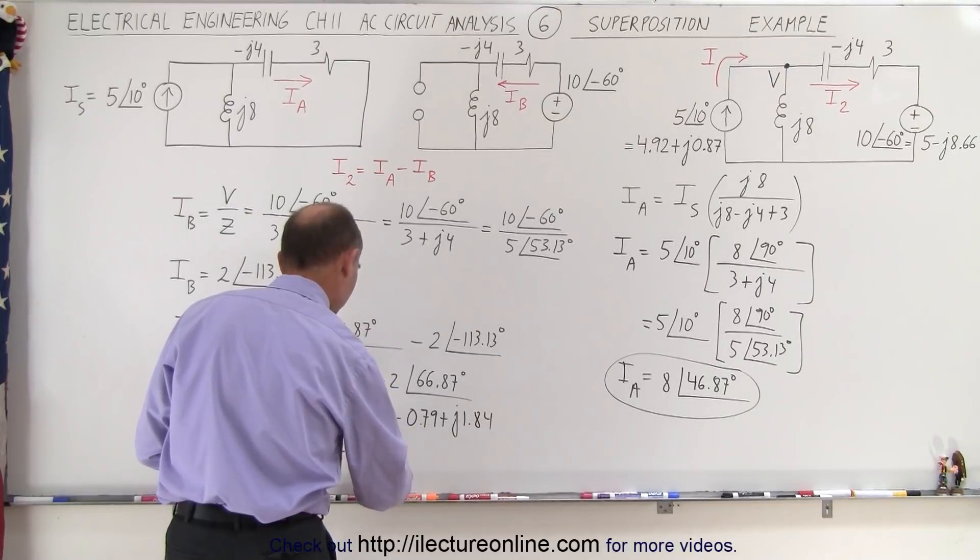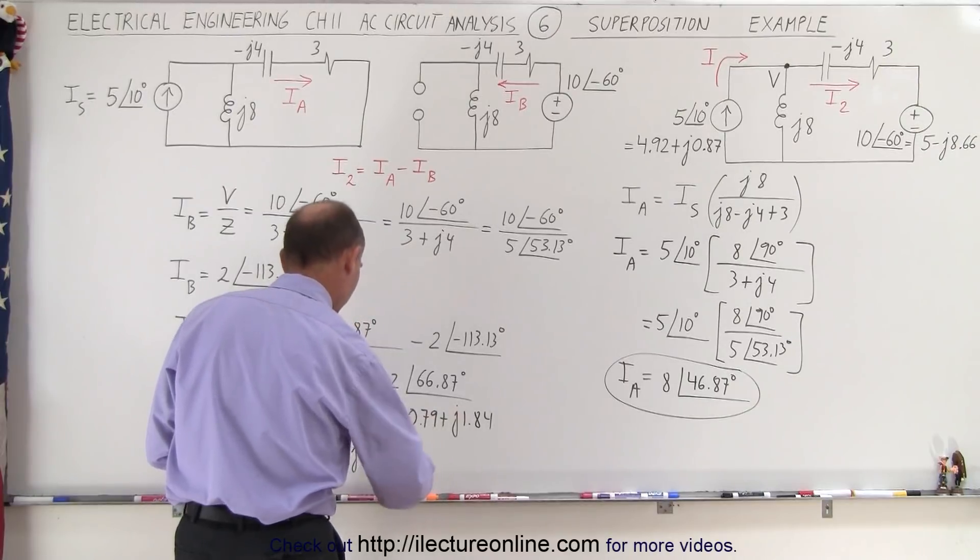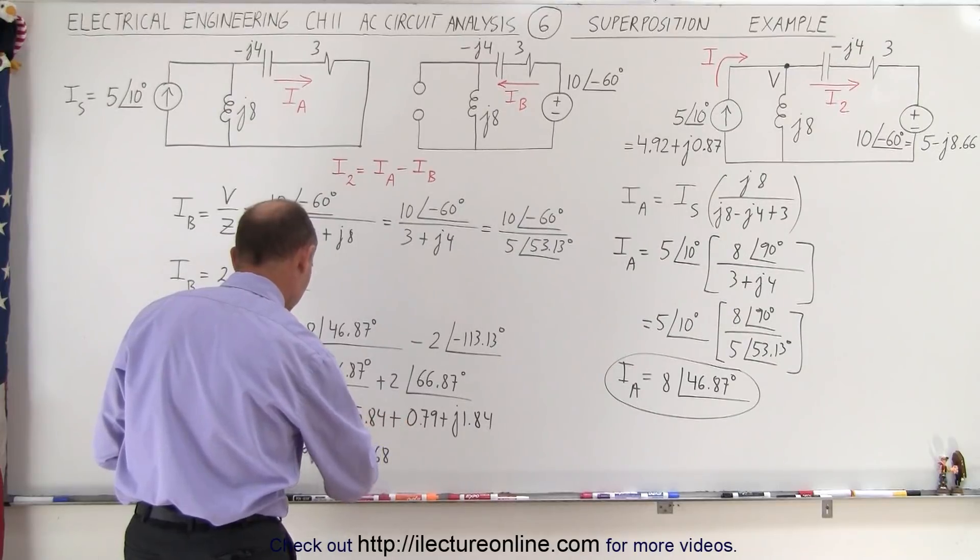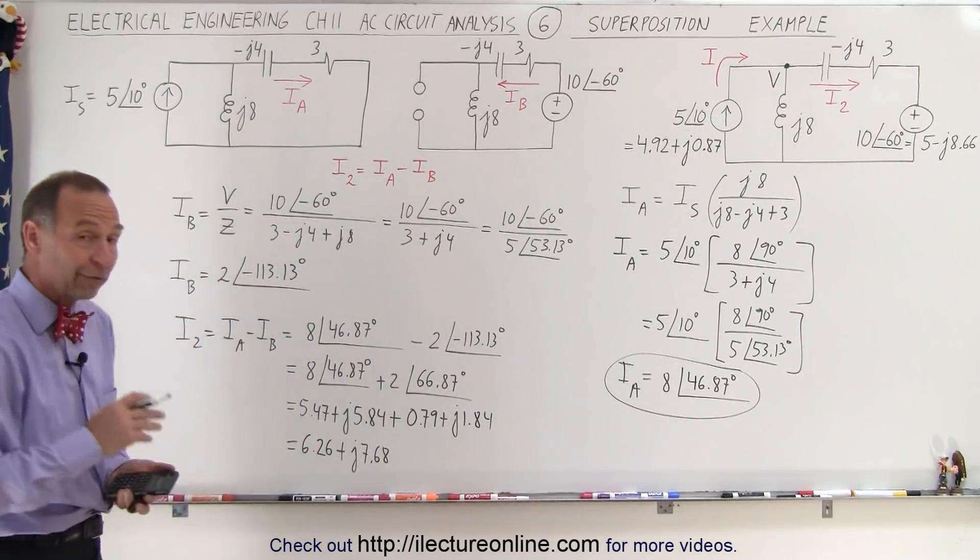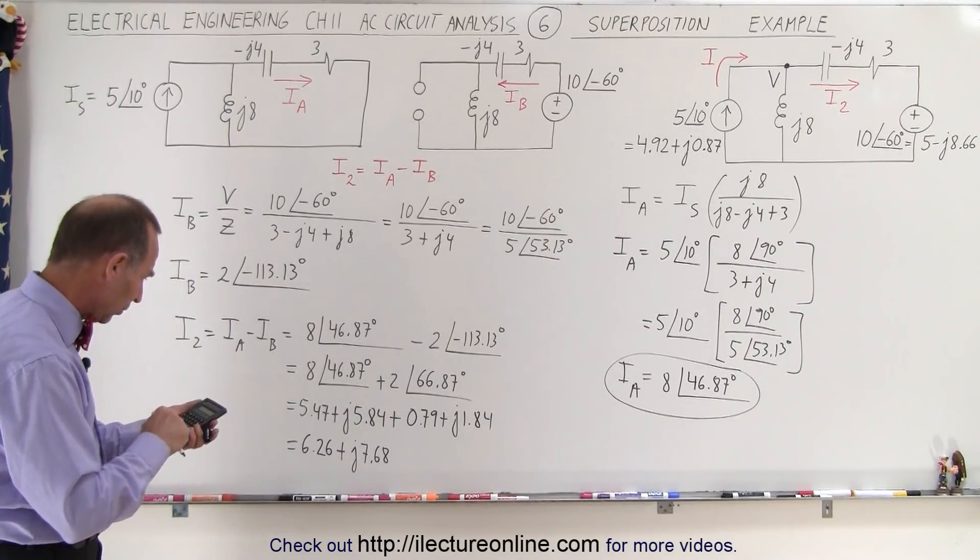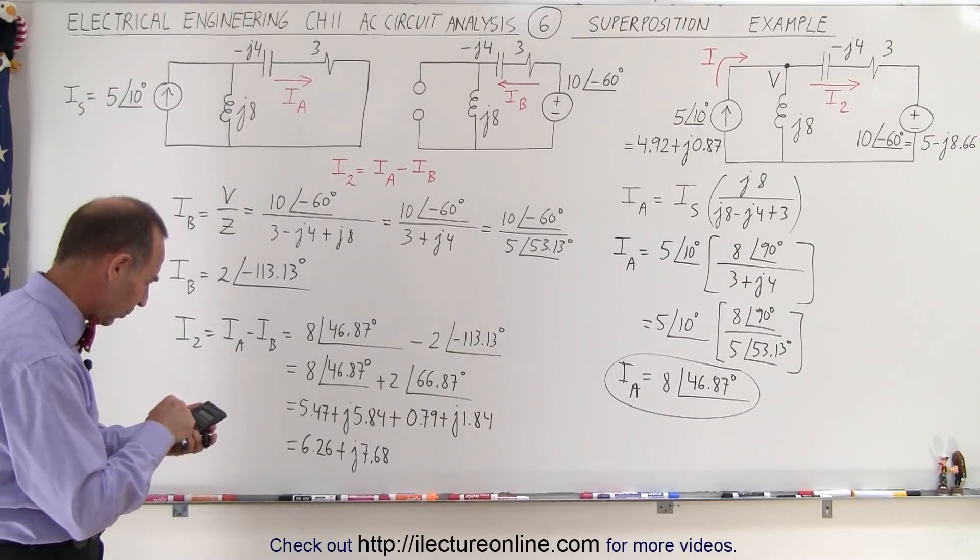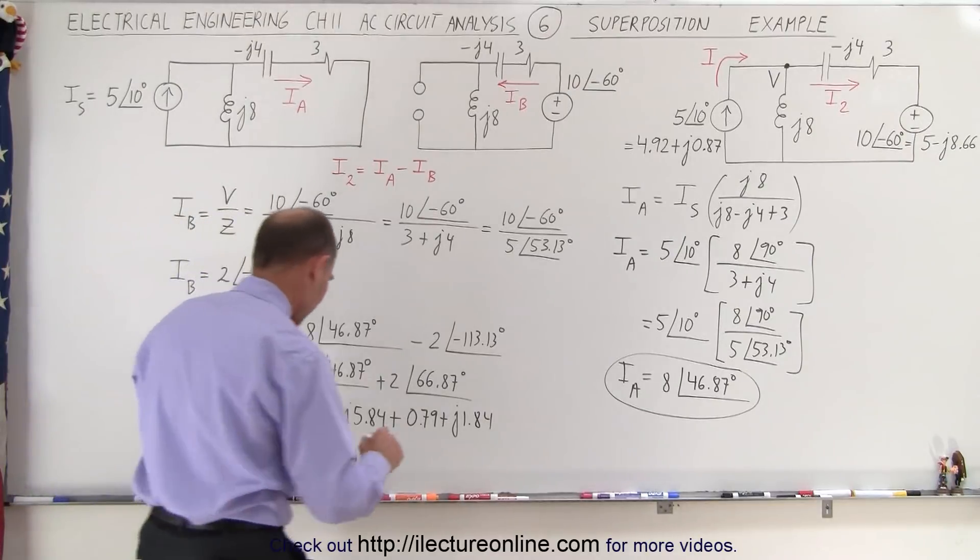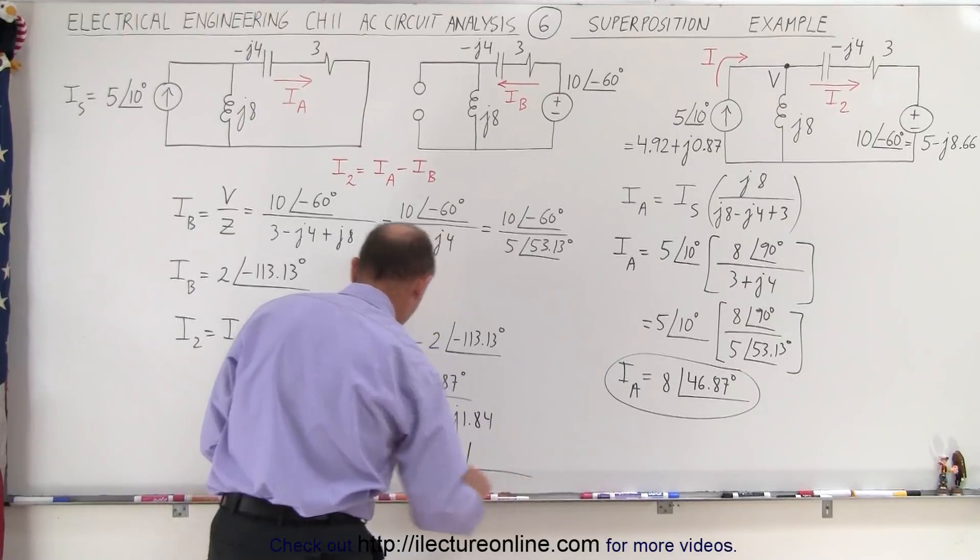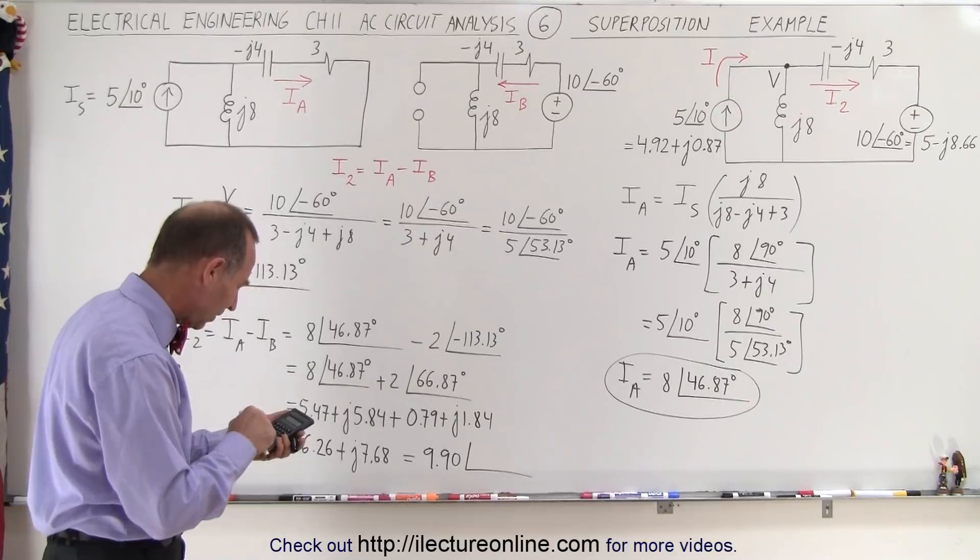And now we want to convert that back to magnitude and phase angle, so 6.26 squared plus 7.68 squared, take the square root that gives us 9.90 with a phase angle of 7.68 divided by 6.26, take the inverse tangent, 50.82 degrees.